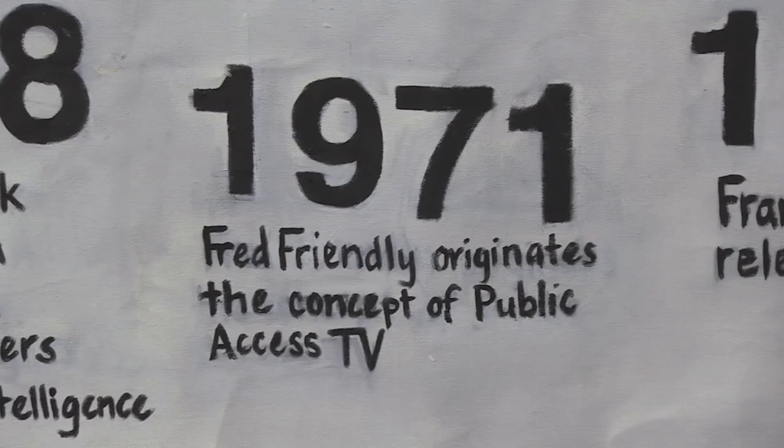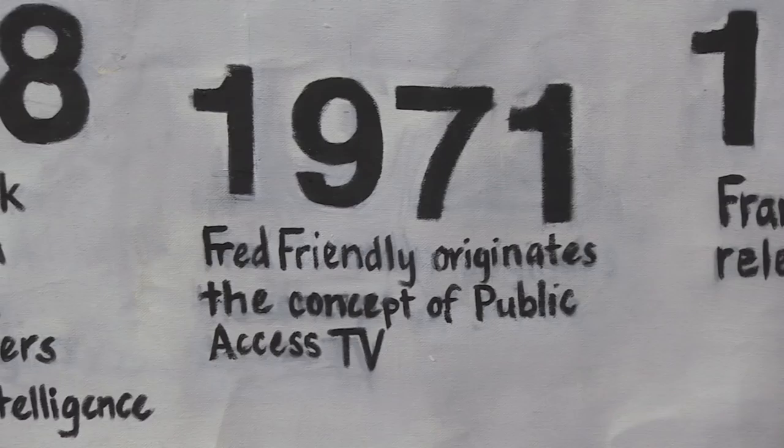In 1971, Fred Friendly created Access Television — the idea that each community needs to have its own non-profit community network television, so that you would see on TV what's happening in your area.